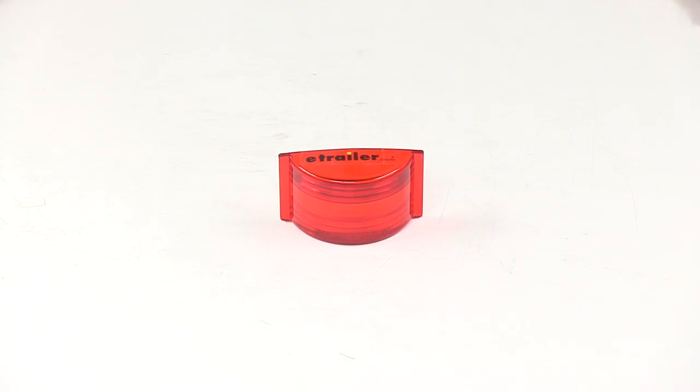Today we're going to take a look at the Optronics replacement red lens for MC82 series armored marker light and clearance lights.